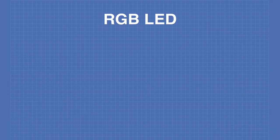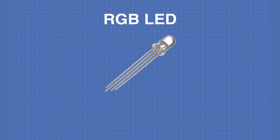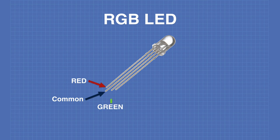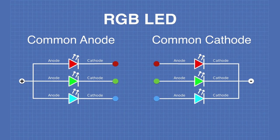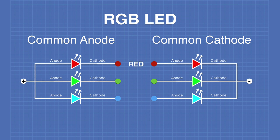A standard RGB LED has four connections. You can determine the identification of those connections by the lead length. The longest lead is the common connection. To the left of that is the red connection, to the immediate right is the green, and on the far right the shortest lead is the blue connection. If the leads have been cut, you can determine orientation by looking for the flat side of the case, which is closest to the red connection. There are two types of RGB LEDs: the common anode and the common cathode. The common anode devices have the anodes of all three LEDs connected together where positive voltage is applied. The common cathode devices have the cathodes connected together where negative voltage is applied.